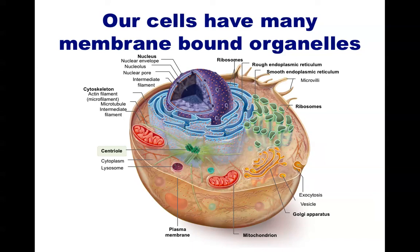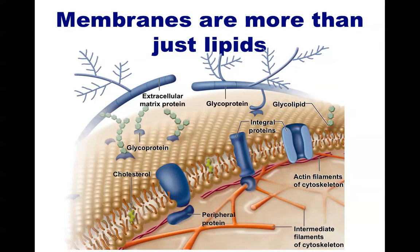Our plasma membrane is not simply a plain arrangement of lipids in a bilayer. Instead, it is made up of more than just lipids — it includes proteins, carbohydrates, different types of lipids, cholesterol molecules, and several other types of molecules. Proteins can be found attached to the periphery of the membrane, and some proteins actually span across the width of the membrane, contacting both the extracellular side and the cytoplasmic side.